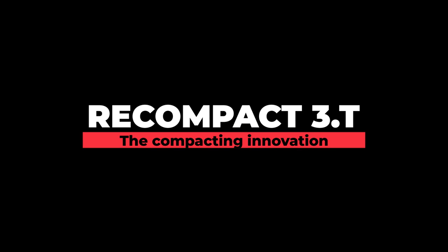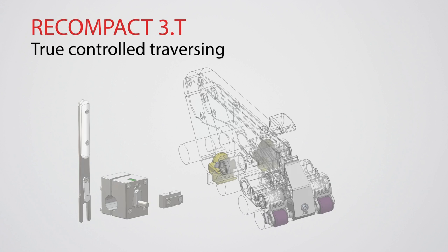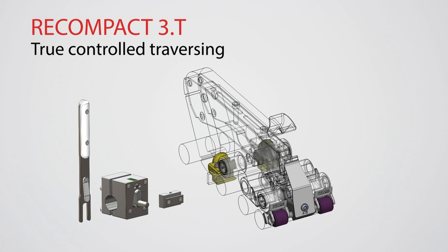Recompact 3T, the only compact spinning solution available for the same cost as conventional spinning. The Recompact 3T is a compacting system providing the best advantages for your spinning mill.